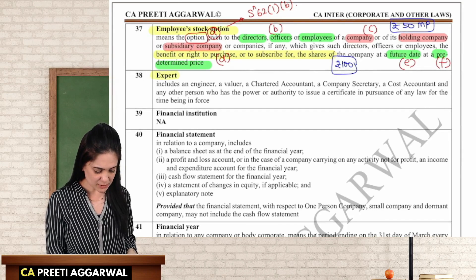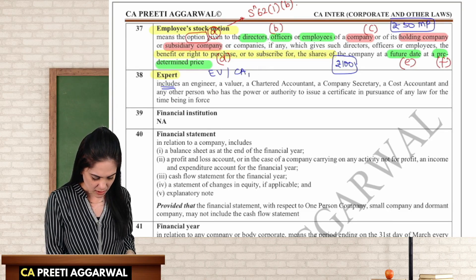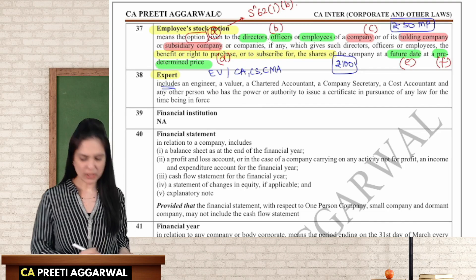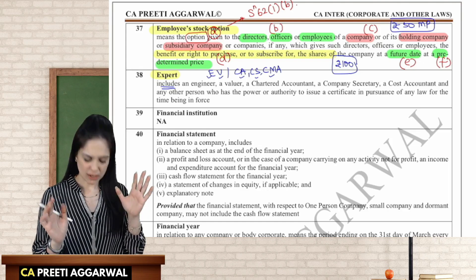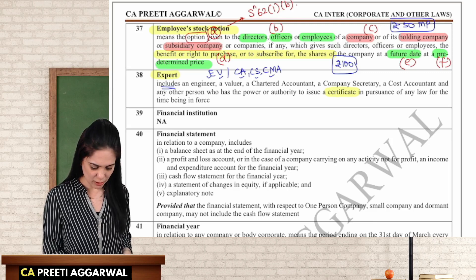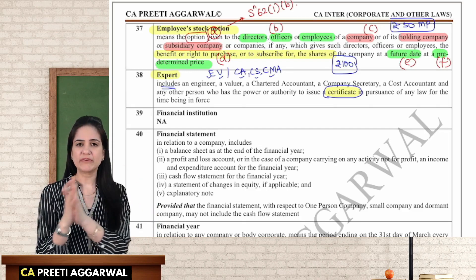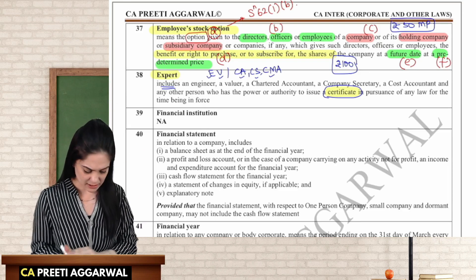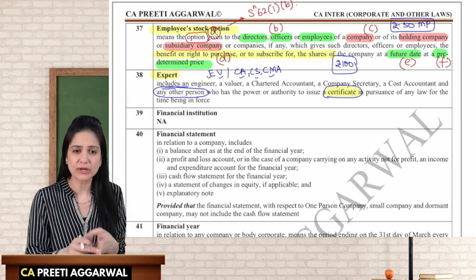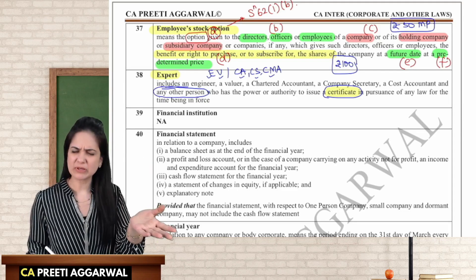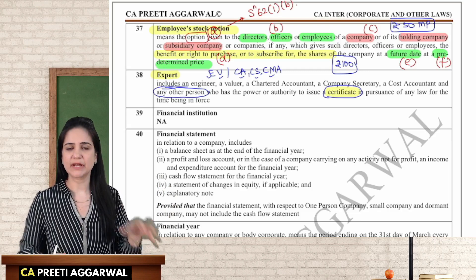Expert — it is an inclusive definition. The mnemonic is E-V-CACS-CMA: E is engineer, V is valuer, CA is chartered accountant, CS is company secretary, CMA is cost accountant. Anyone who can give a certificate in pursuance of any law for the time being in force is also considered an expert. This widens the scope — a doctor can issue a medical certificate, an architect can issue a certificate. Expert was defined for the first time in the Companies Act 2013; there was no definition in the 1956 Act.